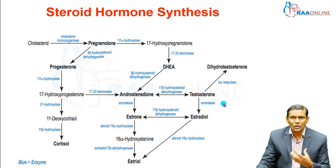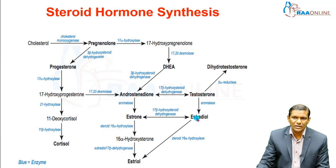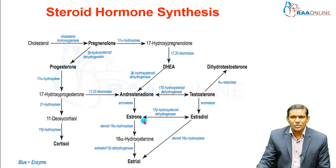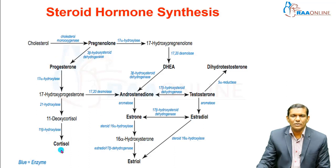There are aromatase inhibitors, which are also very important. Androstenedione gets converted to estrone and finally estriol. This covers normal testosterone synthesis and estrogen synthesis. Progesterone can also lead to the formation of cortisol and other corticosteroids.